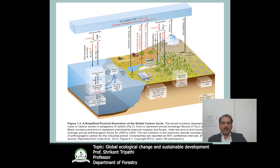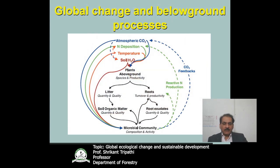On one hand we are increasing CO2 concentration in the atmosphere; on the other hand we are increasing nitrogen concentration by converting inert atmospheric nitrogen gas to the land. Nitrogen is a limiting nutrient in ecosystems and it affects vegetation in different ways. If you look at the integrated effect of increasing atmospheric CO2, nitrogen deposition, increasing temperature, and soil water changes, these directly or indirectly affect plant above-ground and below-ground productivity.